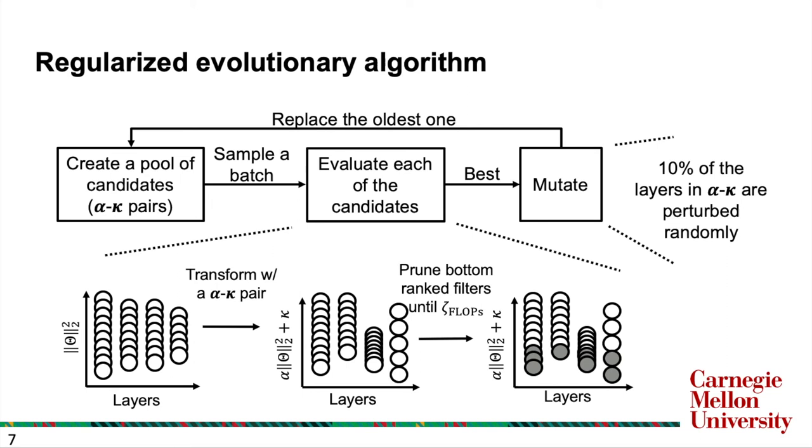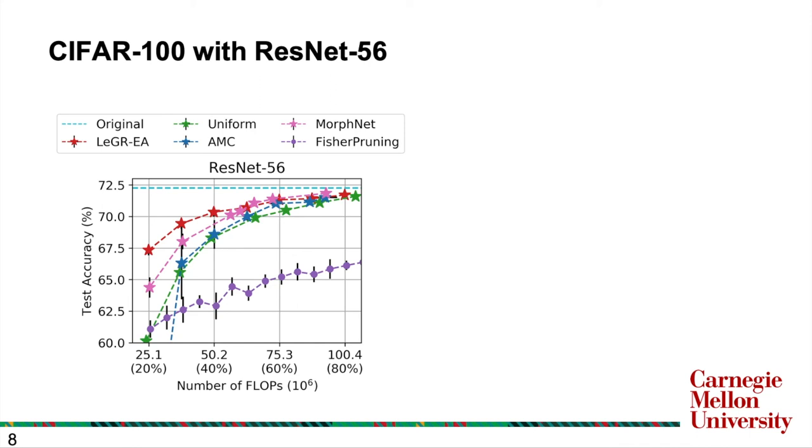Now we understand how the global ranking is learned, let's look at the empirical results. We first show empirical results using CIFAR and ResNet-56. We can see that the proposed method, Ledger-EA, marked in red, outperforms other filter pruning methods including AMC, MorphNet, Fisher-Pruning, and a baseline uniform pruning.